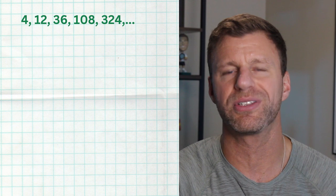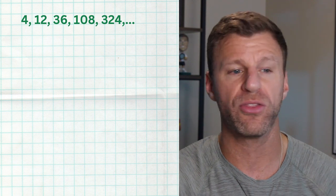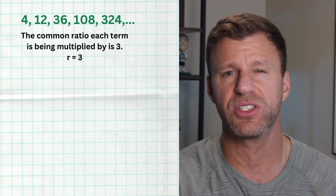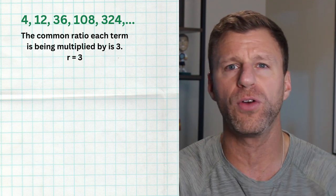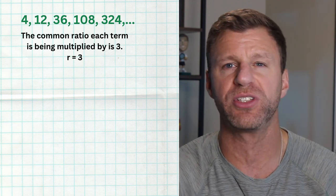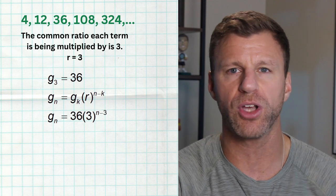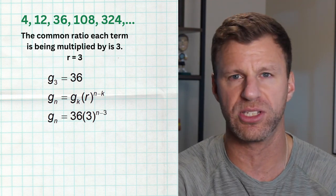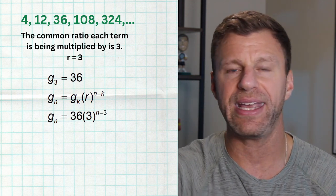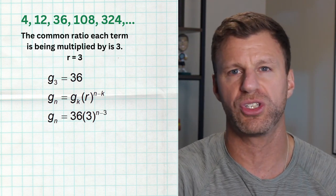Here's our first example: 4, 12, 36, 108, 324. First, we figure out the common ratio. Divide any two consecutive terms: 12 divided by 4 is 3, 36 divided by 12 is 3, 108 divided by 36 is 3. So our common ratio is 3. To generate the formula, we'll use the third term, which is 36. We substitute 3 for r, 3 for k, and 36 for g_sub_k, giving us 36 times 3 raised to the n minus 3.